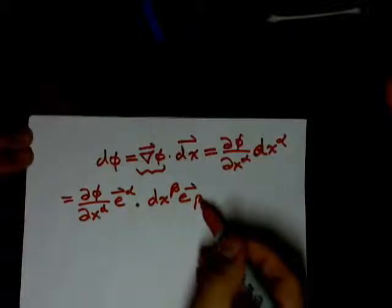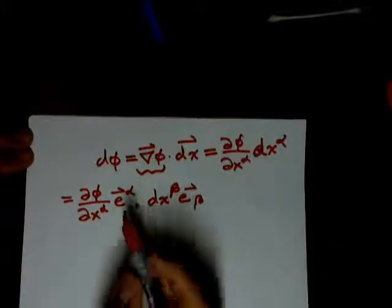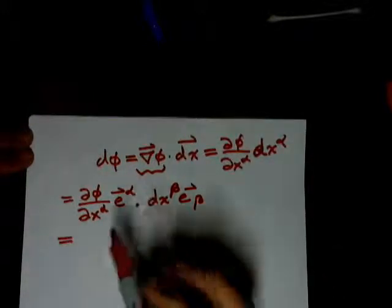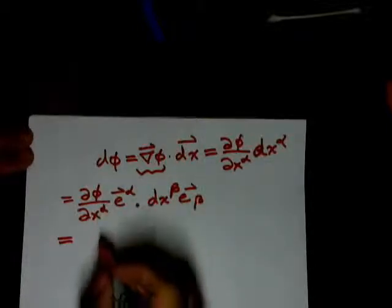And this is a covariant basis, and this is a contravariant basis, or the one-form basis. These are scalars, so we can move these around.